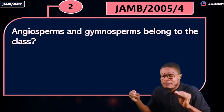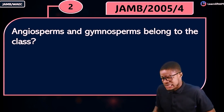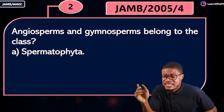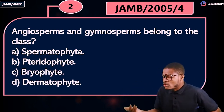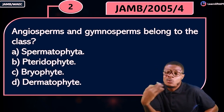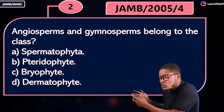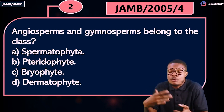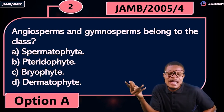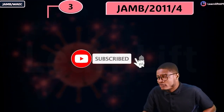JAMB 2005 question 4 asked: angiosperms and gymnosperms belong to which class? Are they spermatophytes, pteridophytes, or bryophytes? Bryophytes are mosses and liverworts. Pteridophytes are ferns, called vascular cryptogams because they have vascular bundles and produce spores — the most advanced spore-producing plants. The correct answer is spermatophytes.